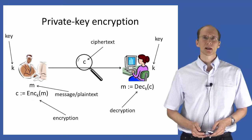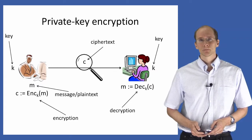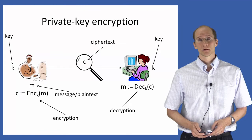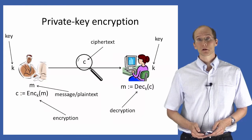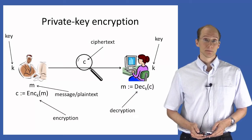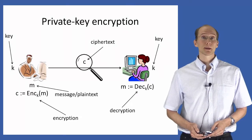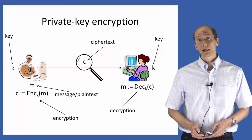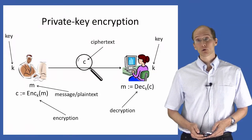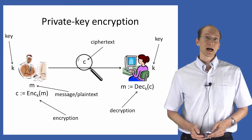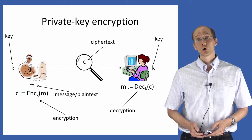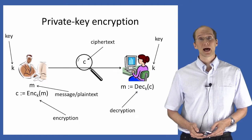Since it's been a while since we've looked at private key encryption, let me briefly remind you of the setting. We have two parties, Bob and Alice, who have shared a key K in advance. When Bob has some message M that he wants to send to Alice, he'll encrypt that message using the encryption scheme and their shared key K. This results in a ciphertext that Bob sends across the channel to Alice. Upon receiving this message, Alice will use her key to decrypt the ciphertext and recover the original message. At a high level, the parties are trying to ensure secrecy of their communication against an eavesdropper who can observe everything being sent across the channel between Alice and Bob.